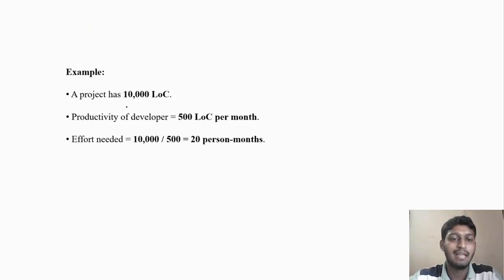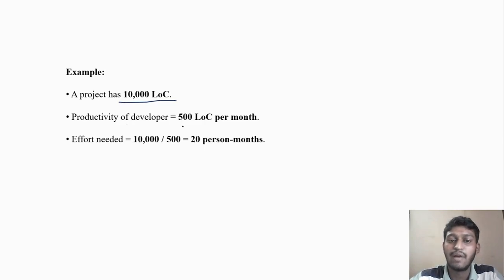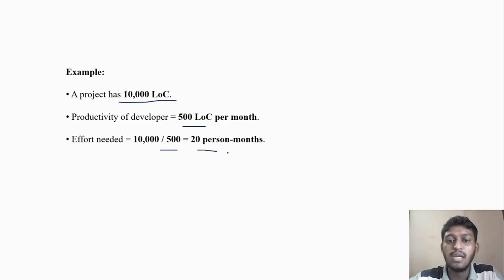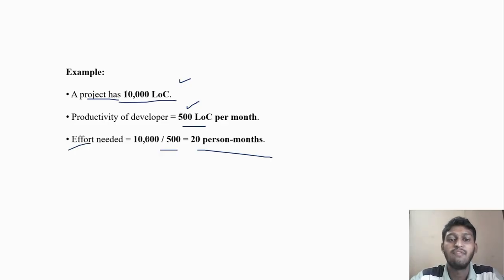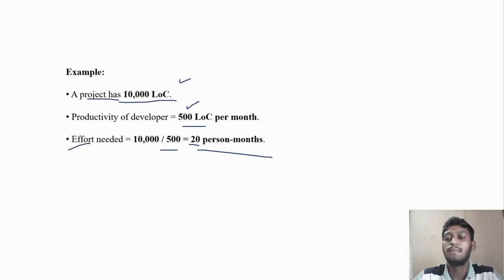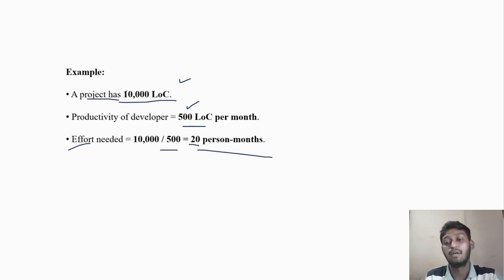For example, a project has 10,000 LOC and the productivity of the developer is 5,000 LOC per month. To find effort: Effort = LOC divided by Productivity = 10,000 divided by 5,000 = 2 months. So the project will take 2 months to complete.